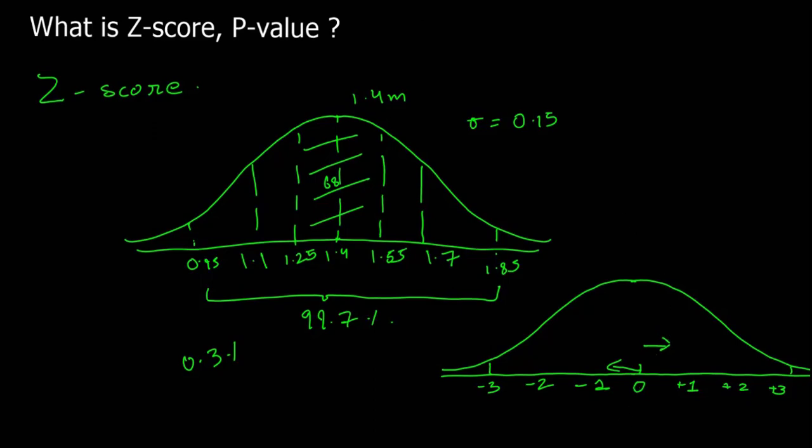Now we will move on to the next concept, which is P-value. P-value is also known as probability value, and it is the probability of obtaining a sample more extreme than the ones observed.